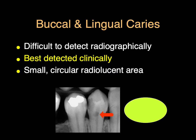Buccal, lingual, and facial decay is difficult to detect on a radiograph and is really best detected clinically. If we can see it on a radiograph, sometimes it just presents as a small circular radiolucent area. But a dental radiograph is not the best way to detect these carious lesions.